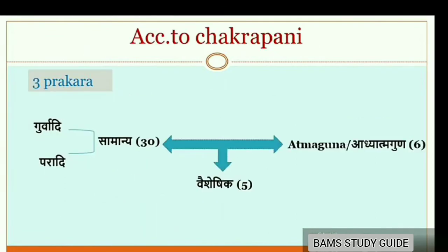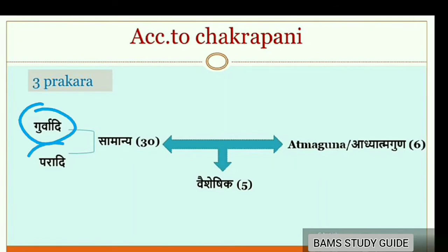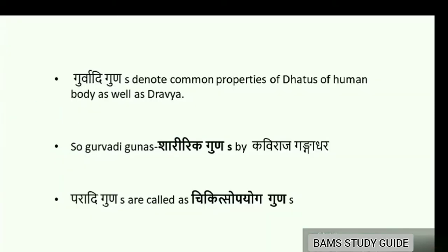Chakrapani also classified these Gunas into three Prakaras: Samanya, Vaishishika and Atma Gunas. He told Samanya Gunas as Gurvādi and Parādhi Gunas. Gurvādi Gunas are those that denote common properties of Dhatus of the human body as well as the Dravya. Because of the similarity of the building constituents of Gunas with the Sharira Dhatus, they are named as Sharirika Gunas by Kaviraja Gangadhara.